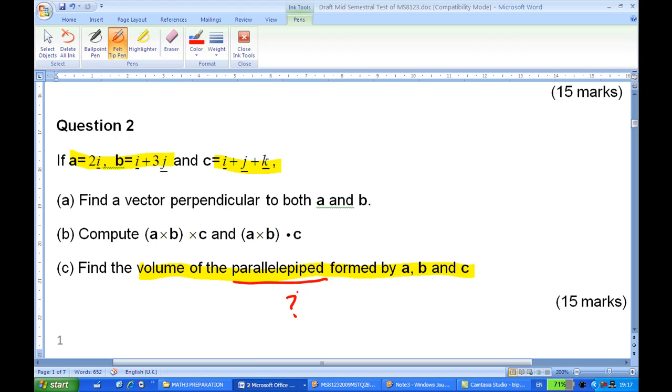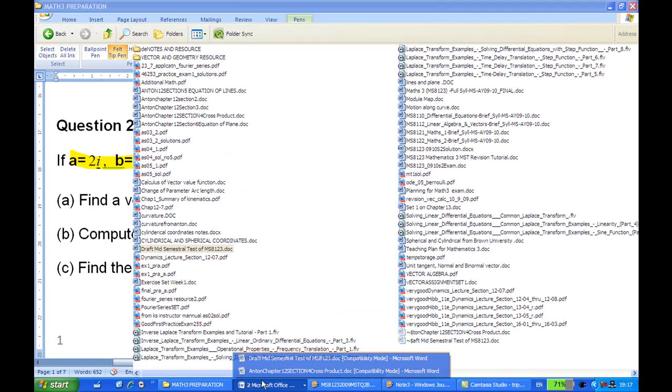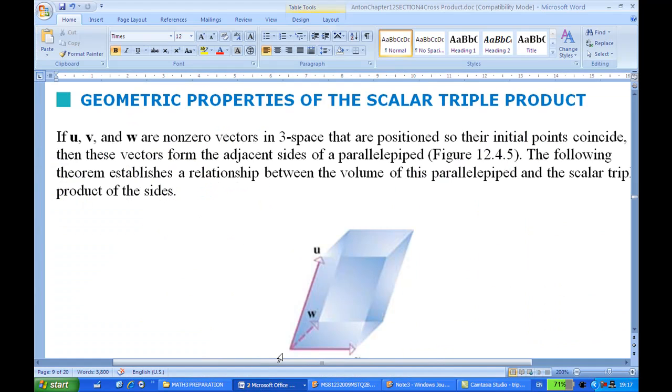For this, you may want to refer to Howard Anton, chapter 12, section 4. So in this case, in the geometrical properties of scalar triple product,